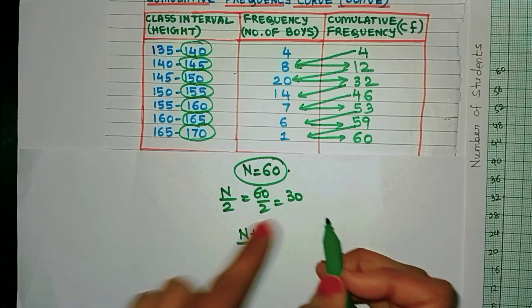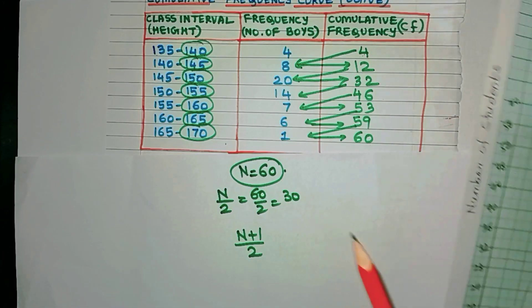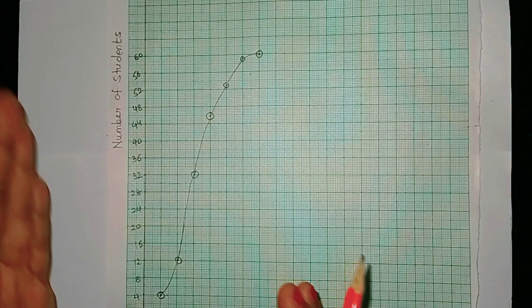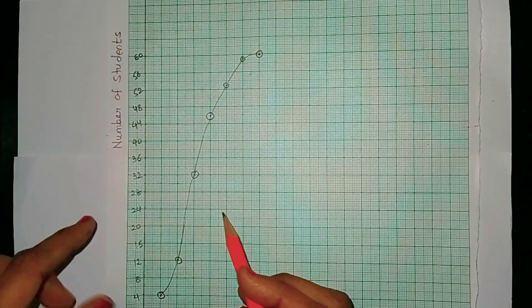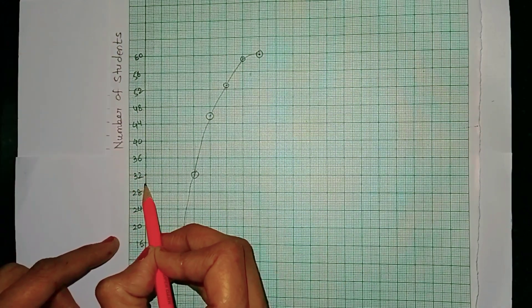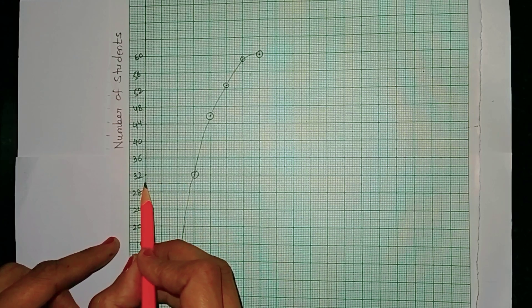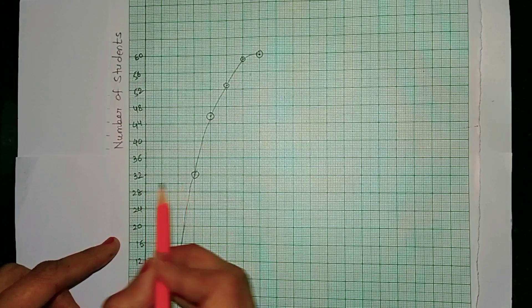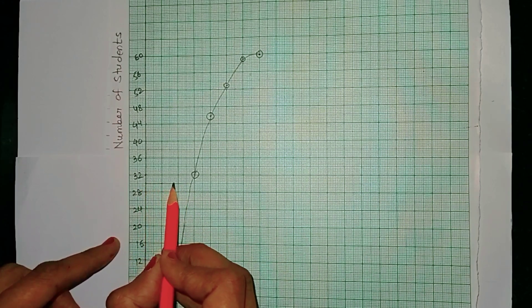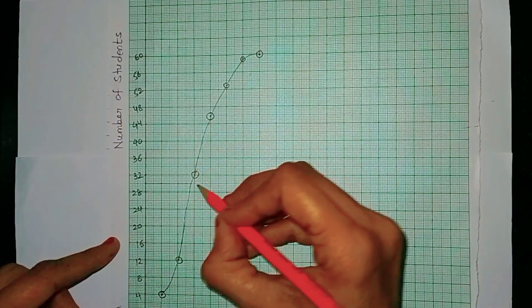That means the 30th observation will have the median value. Now in case your n is odd, then you can take n plus 1 by 2, but here n is even, so I got 30. Now let's see where is the 30th observation on the y-axis.